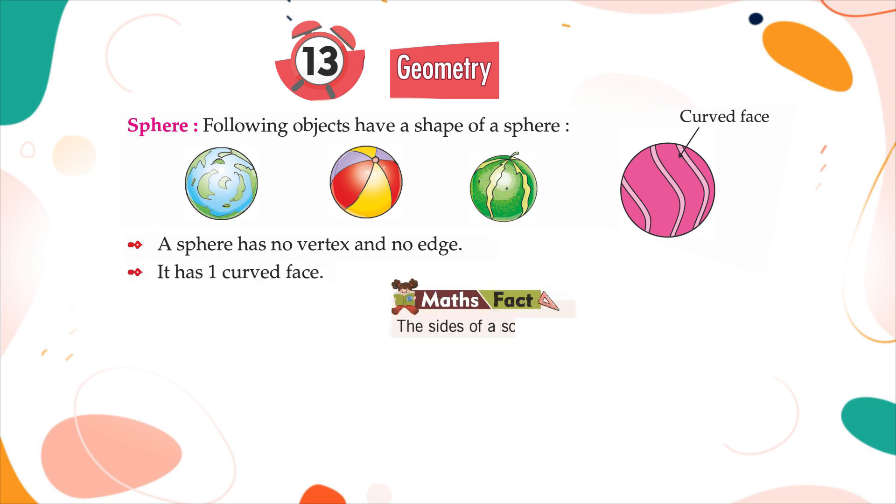Math Fact: The sides of a solid shape are called edges and the corners where the sides meet are called vertices. Rolling and sliding.